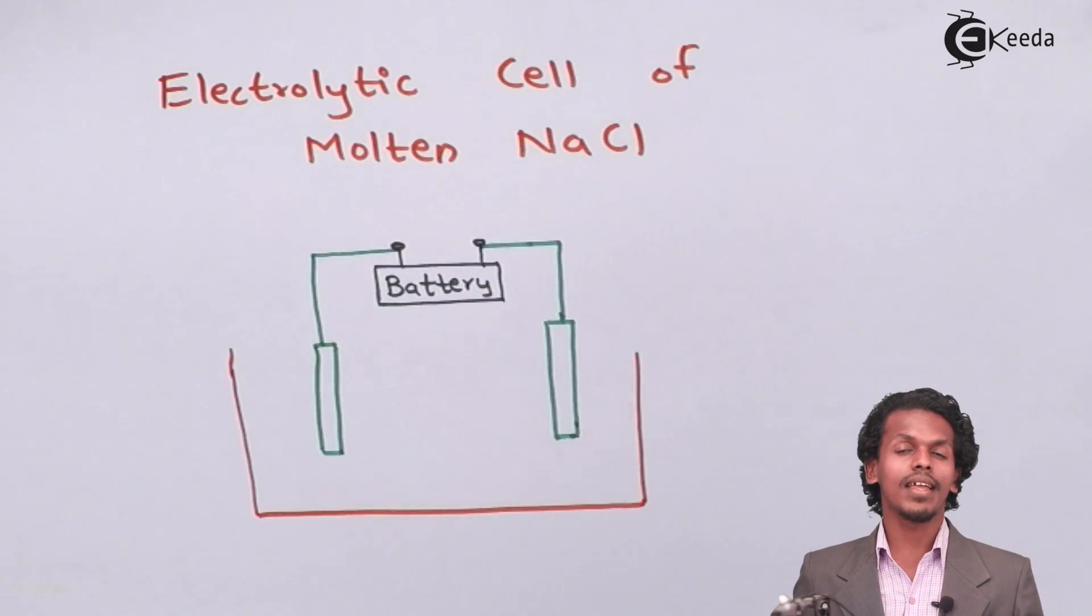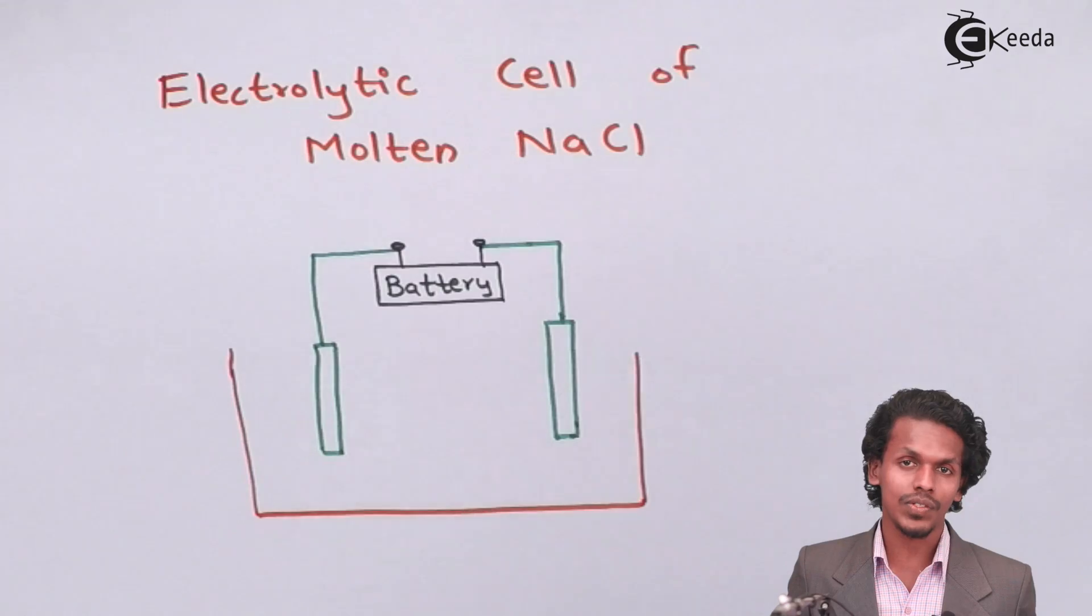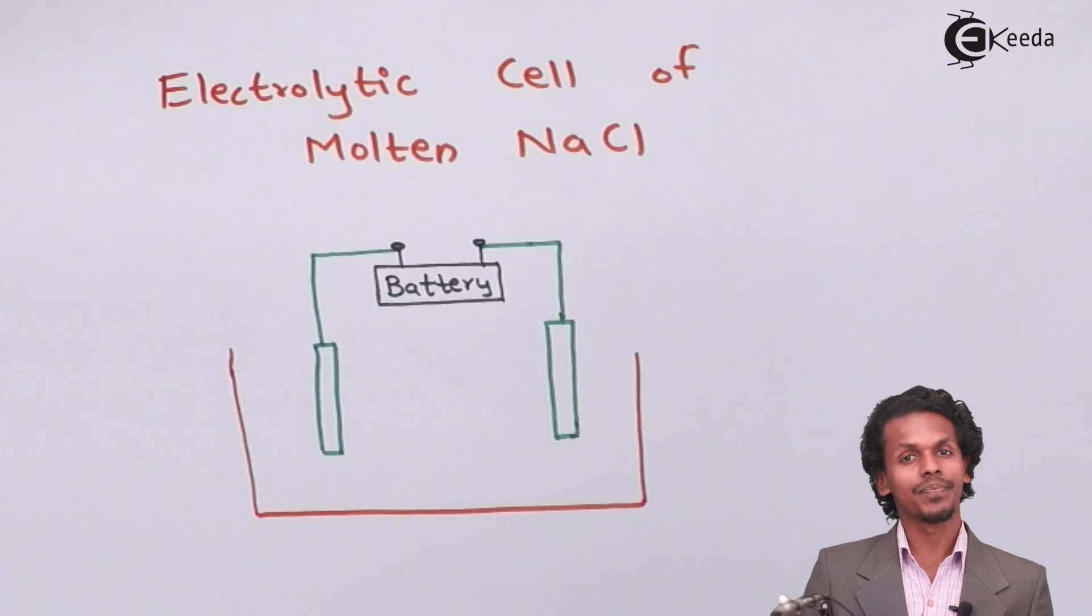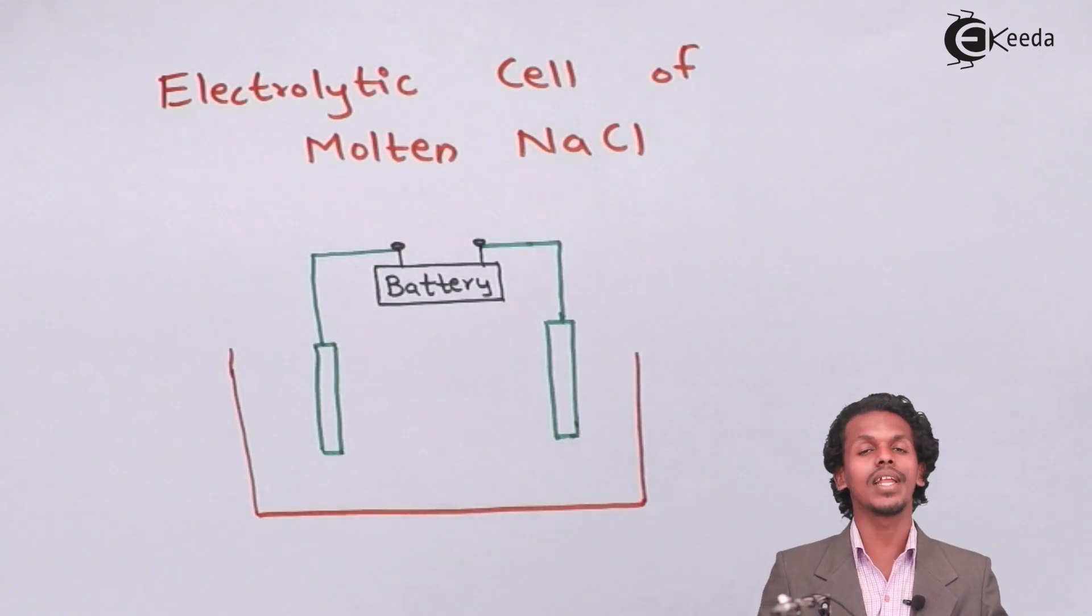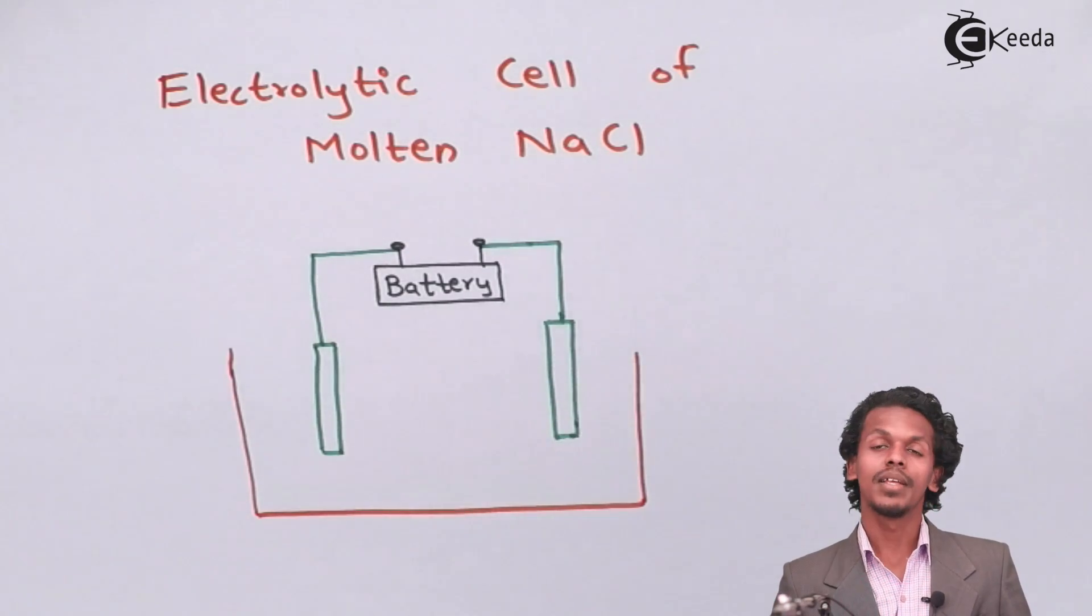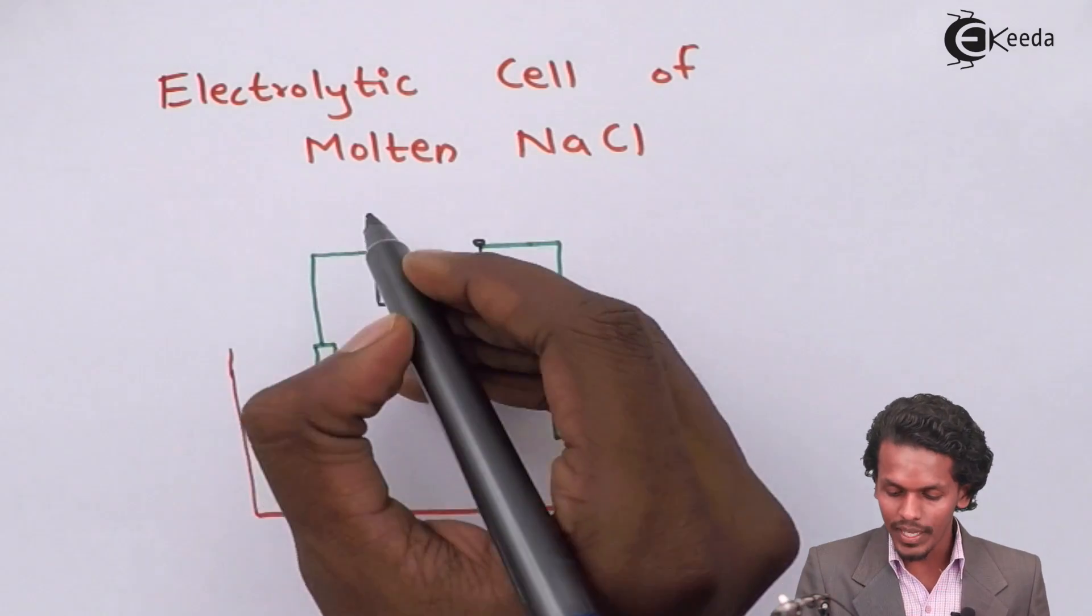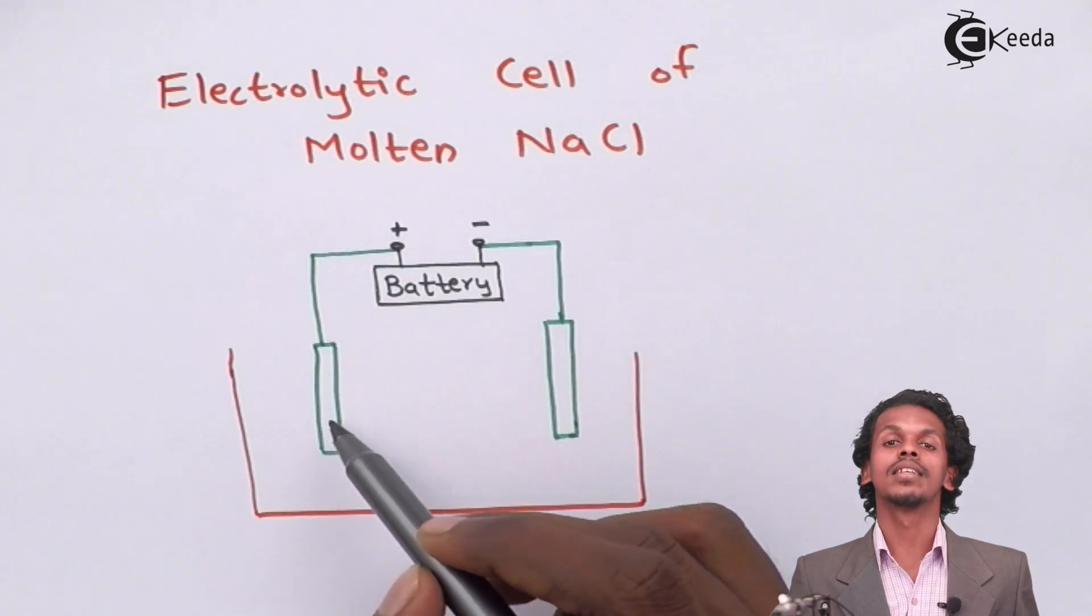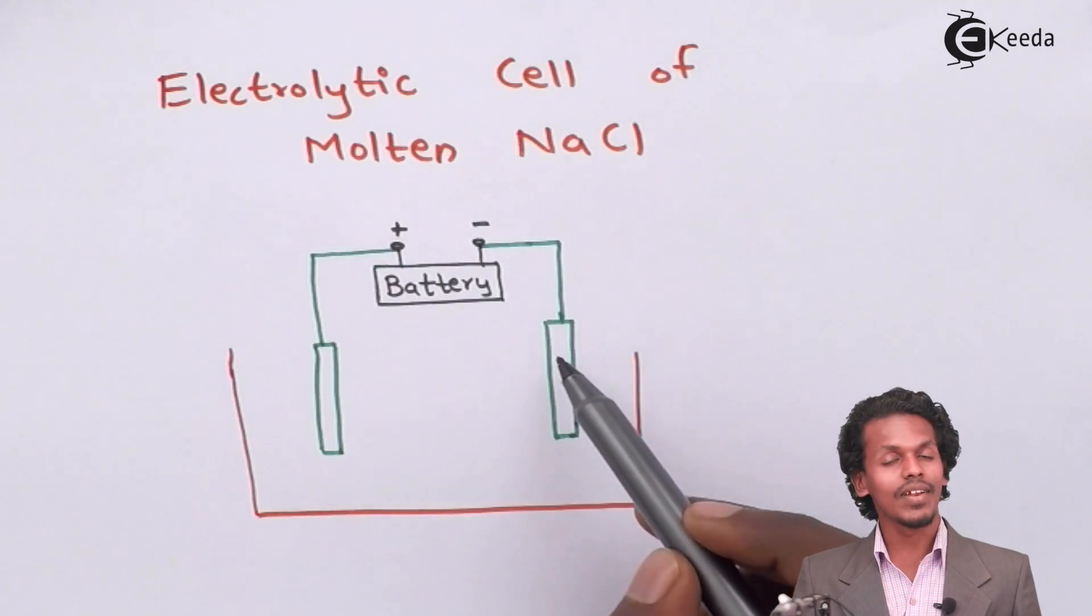As mentioned on the screen, I have drawn a diagram based on the electrolytic cell of molten NaCl. For this process, we have to apply an external source of battery so that the non-spontaneous reaction will be converted into a chemical reaction. In this case, we have to apply electrical energy. I have considered two electrodes that are dipped - these are carbon rods used as anode as well as cathode. If this is a battery, there would be a positive charge and a negative charge. So in this case, this electrode will act as an anode, while this will act as a cathode.